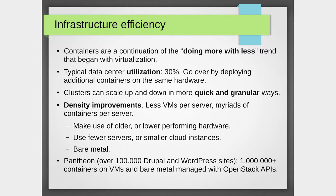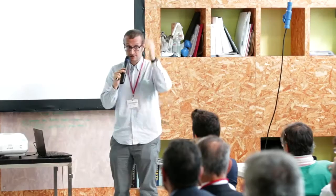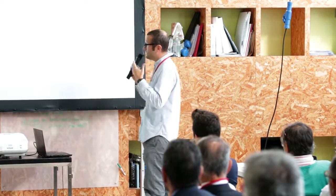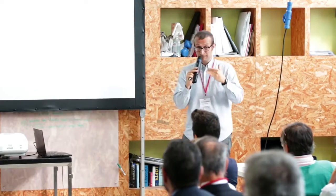People perceive containers as an advantage for application deployment, which is very true and very convenient. But from an OpenStack perspective, the big thing about having containers is to improve utilization. 30% is the usual utilization within data centers — we can do better than this. With containers, because we can quickly and in a granular way scale up and down clusters, there is also the concept of density improvement.